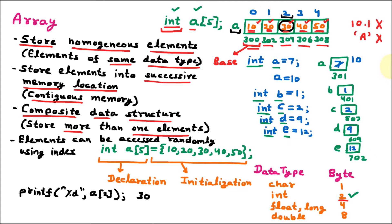Elements can be accessed randomly using the index. The index starts from zero. If the array has size 5, the range is 0 to 4. To access the element 50 at the last position, the array name is a and the index is 4 — so we write a[4] to get the value 50. This is the basic concept of arrays.